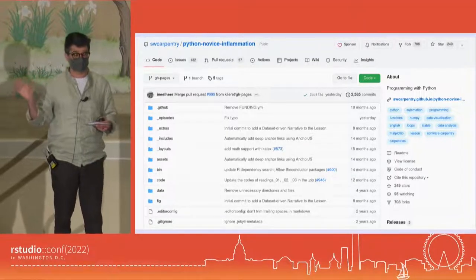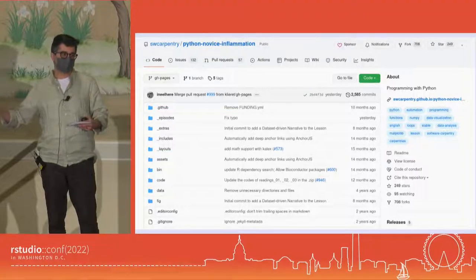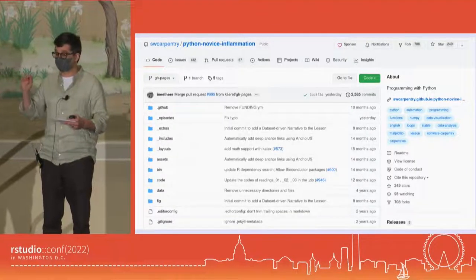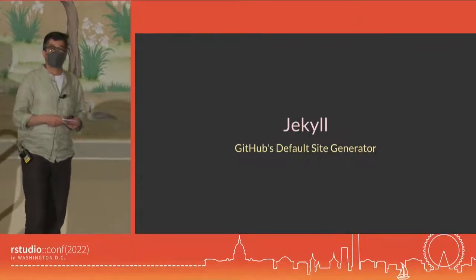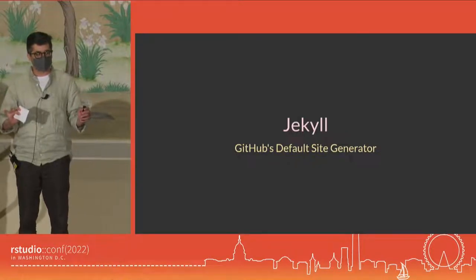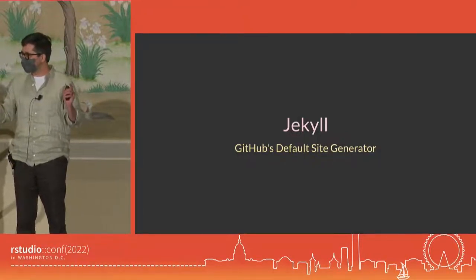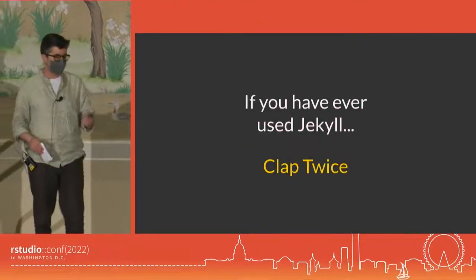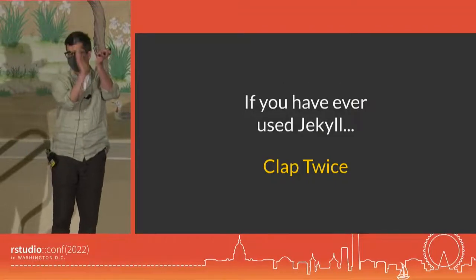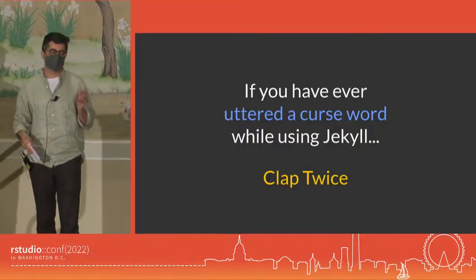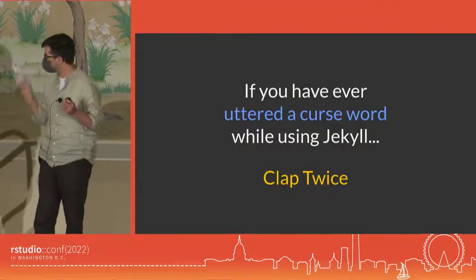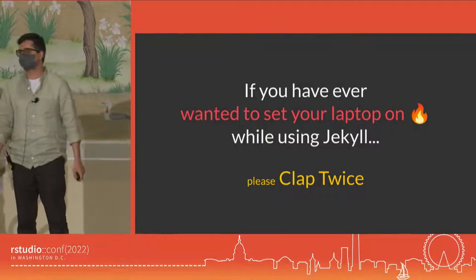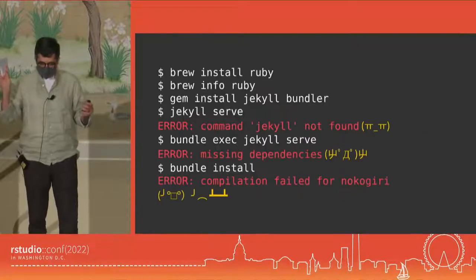Eventually, they switched over to Jekyll, which is GitHub's default site generator. I'm going to ask for a little audience participation here — I'm going to ask you three questions; if the answer is yes, clap twice. First: if you have ever used Jekyll, clap twice. If you have ever uttered a curse word while using Jekyll, clap twice. And if you have ever wanted to set your laptop on fire while using Jekyll, clap twice. So yeah, Jekyll's kind of hard to use.